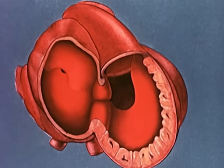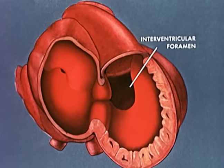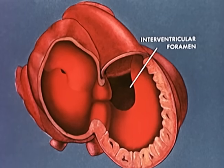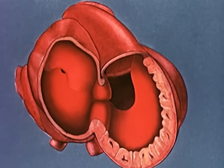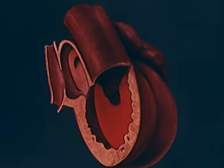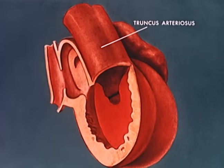An opening persists between the ventricular cavities. Closure of this interventricular foramen awaits the elaboration of a complex spiral septum, which splits the truncus arteriosus and conus region into the aorta and pulmonary artery. The formation of this partition is more clearly seen if the heart is turned by 45 degrees. Originally, the right and left ventricles share a common outflow channel, the truncus arteriosus, which gives rise to the aortic arches.